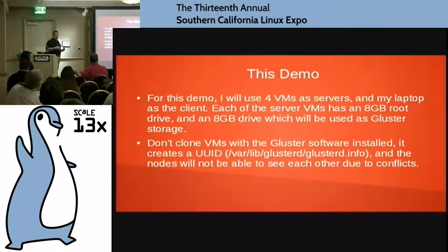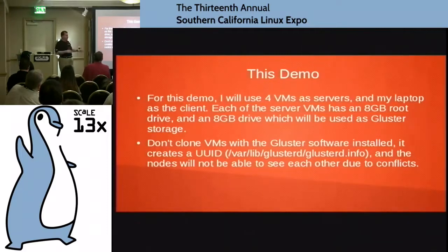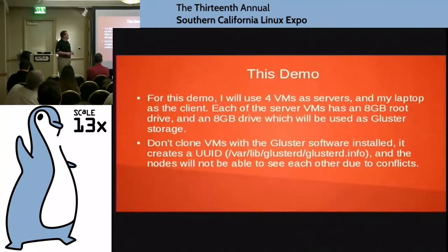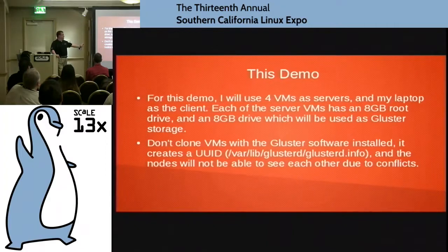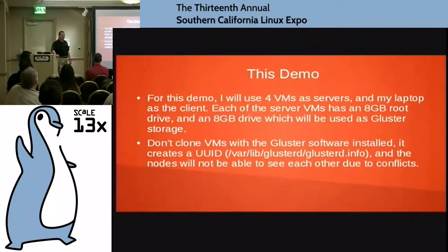A little bit about this demo. I was going to do a live demo, but the screen real estate is simply not big enough to show you effectively, so I did screenshots. I had four VMs that I call servers — the ones upon which I install the Gluster software. Each one has an 8-gig root drive and an 8-gig drive for Gluster storage. A little gotcha: clone VMs before you install the Gluster software, because the first time you fire it up, it creates a glusterd.info file under /var/lib/gluster that has a UUID in it. If you clone multiple times, they all come up with the same UUID.